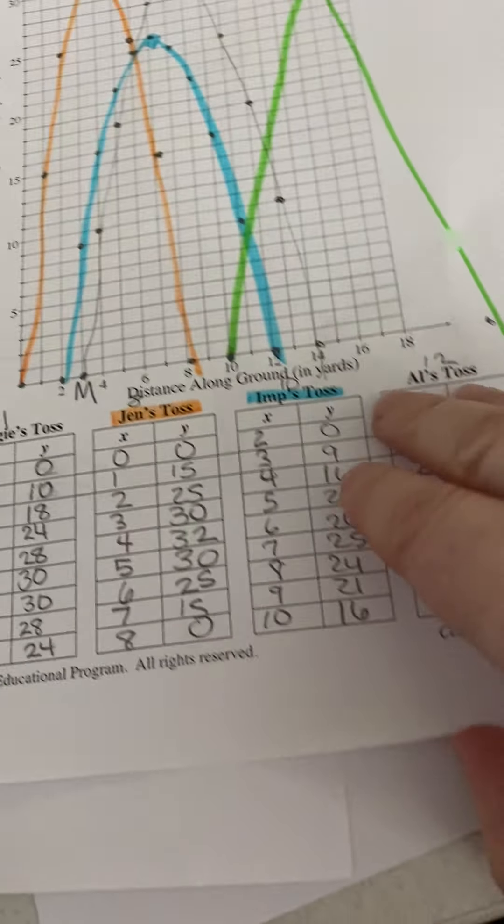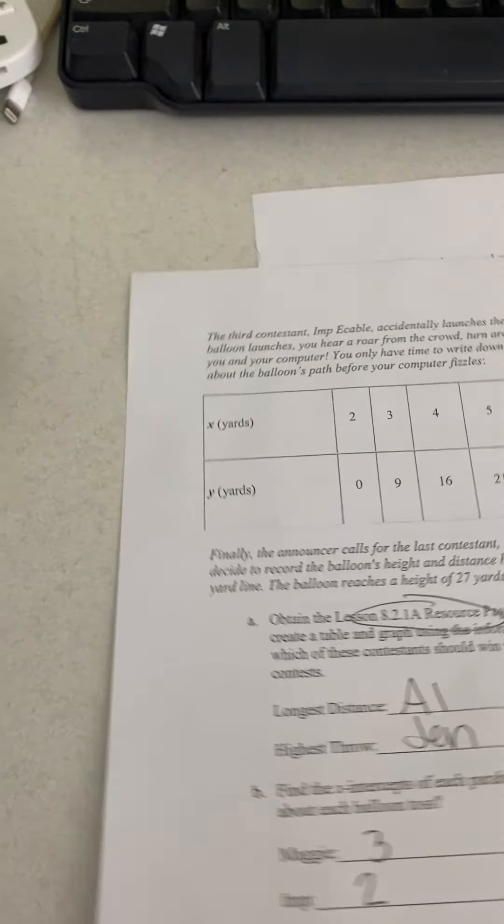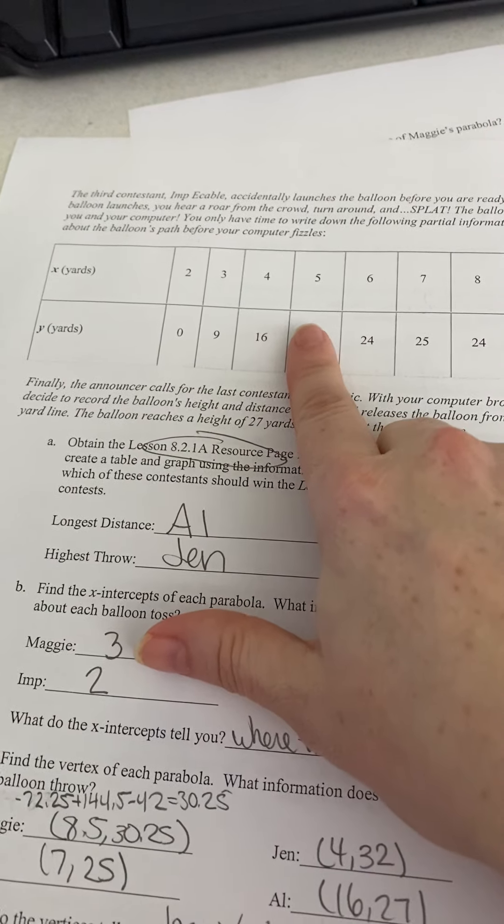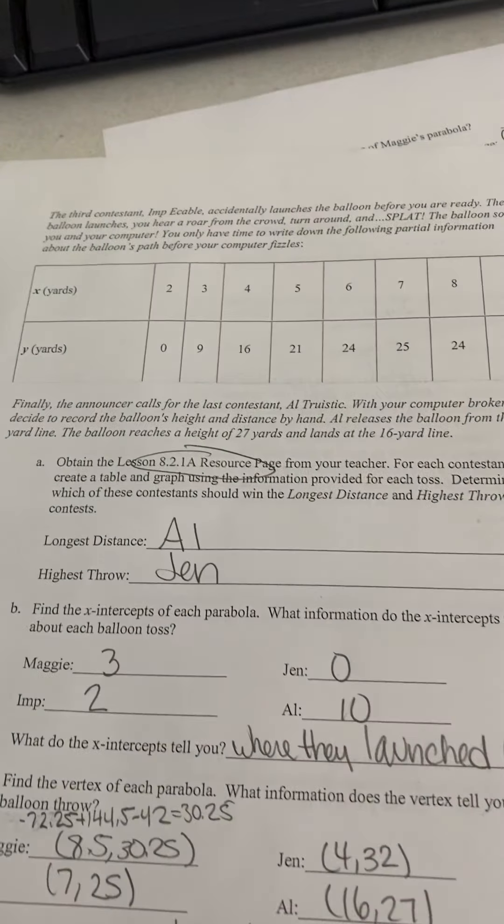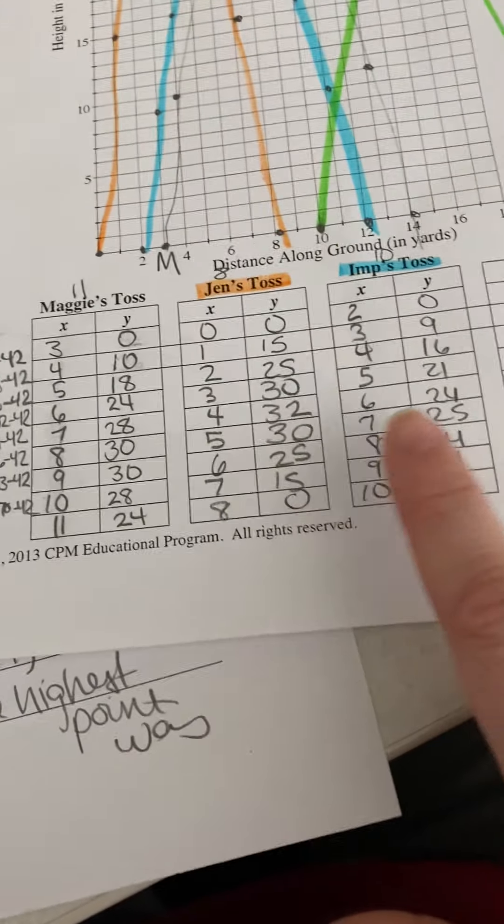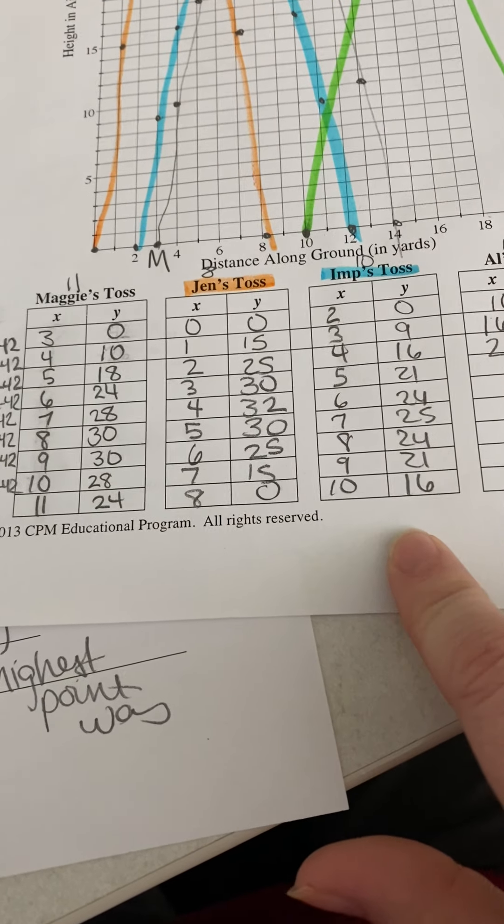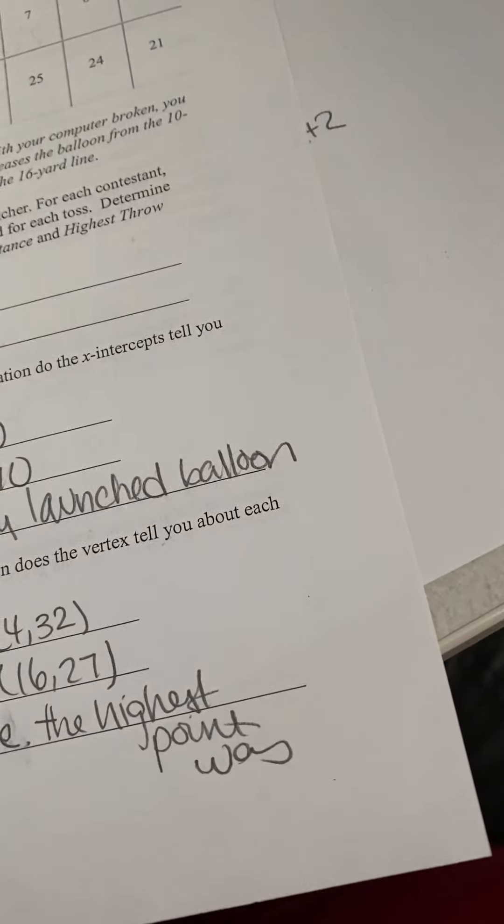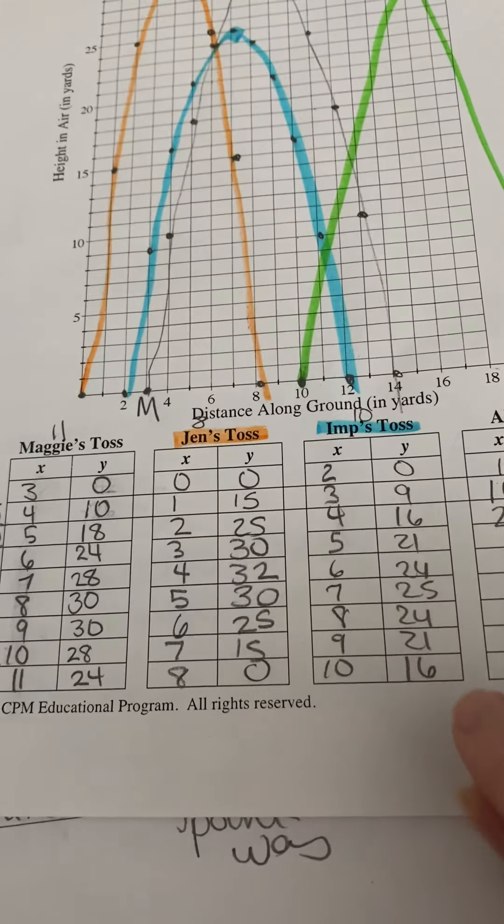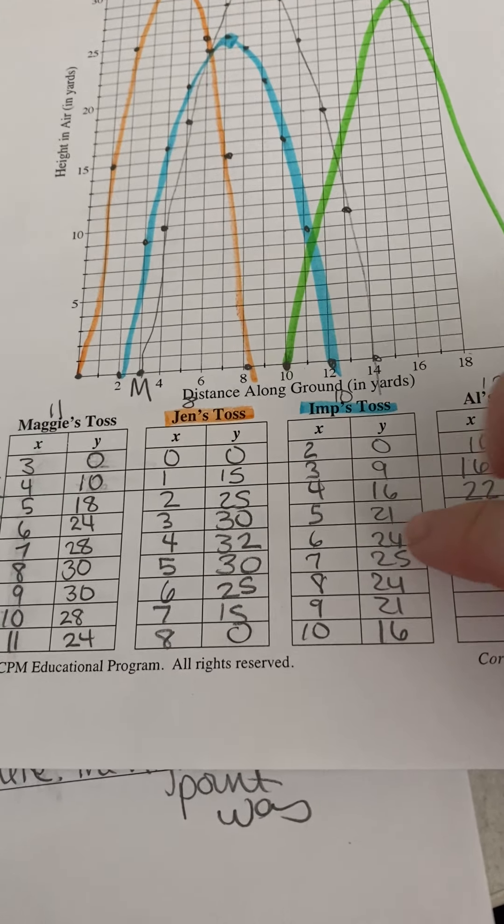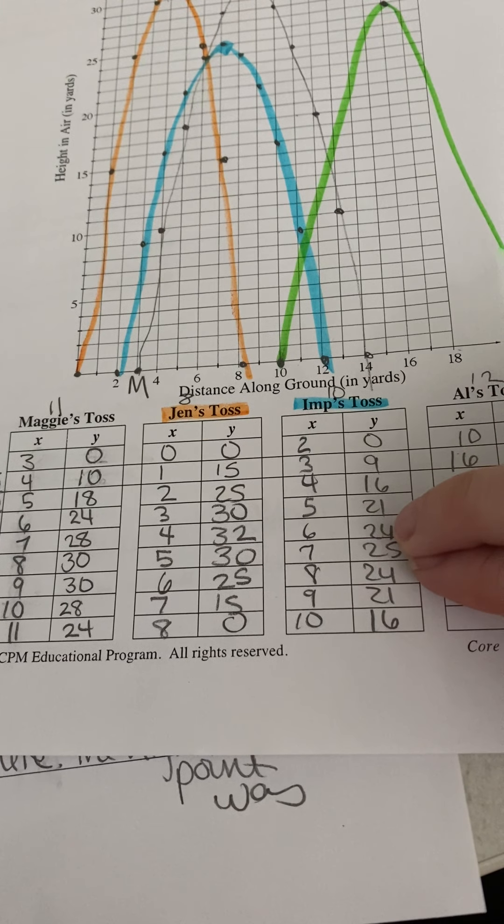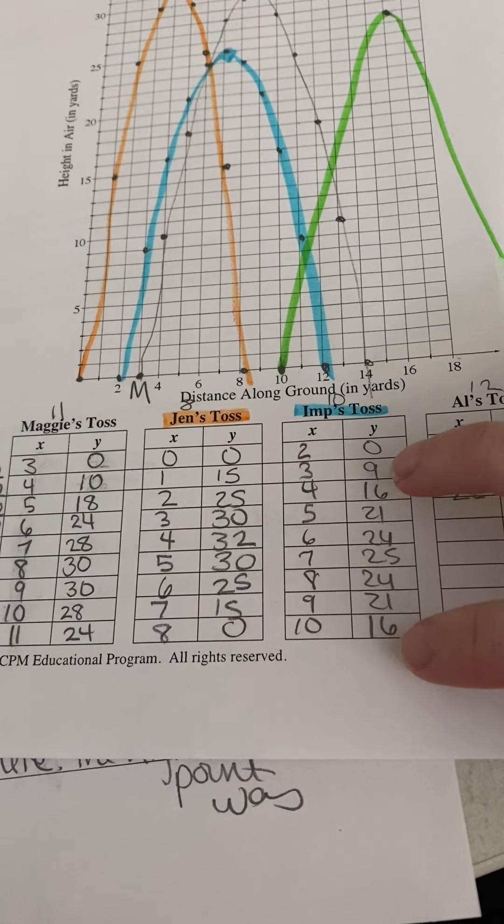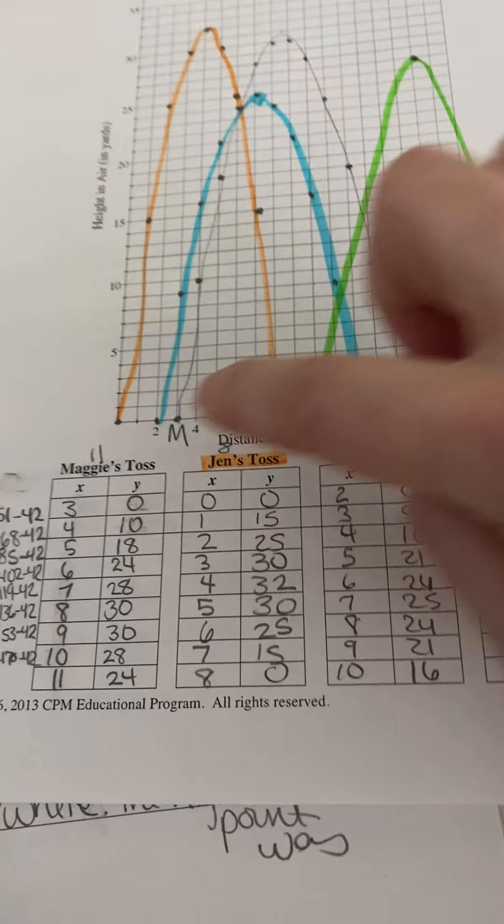And then Imp, they give you a table. And so, I pretty much just copied the table that they gave us and then I continued it on. So, it stopped at 9. But again, you see that here's the vertex. There will be a place on a parabola that it starts to repeat. So, you can just go backwards like that. So, plotted those points.